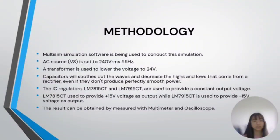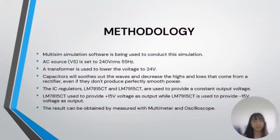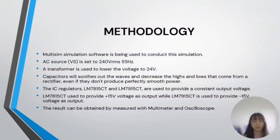Next, methodology. Multisim simulation software is being used to conduct this simulation. The AC source is set to 240V RMS at 50Hz frequency. A transformer is used to lower the voltage to 24V. Capacitors smooth out the waves and decrease the highs and lows from the rectifier, even if they don't produce perfectly smooth power. The IC regulators LM7815CT and LM7915CT are used to provide a constant output voltage — LM7815CT provides positive 15V output, while LM7915CT provides negative 15V output. Results are obtained by measurement with a multimeter and oscilloscope.